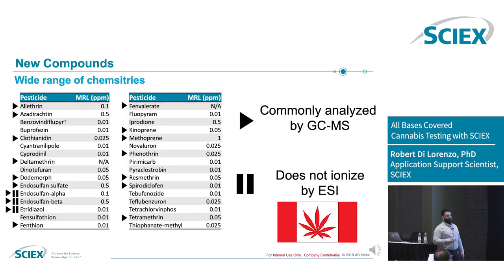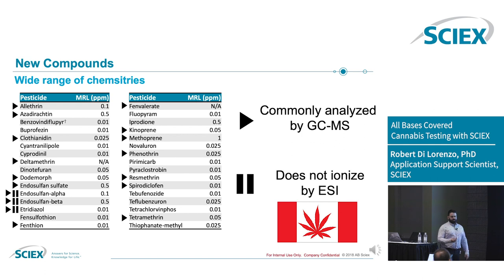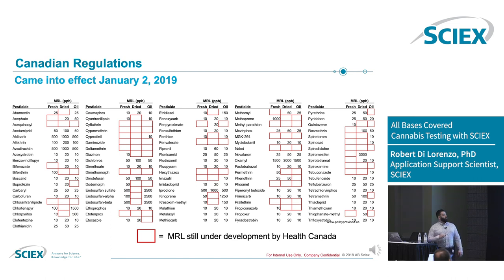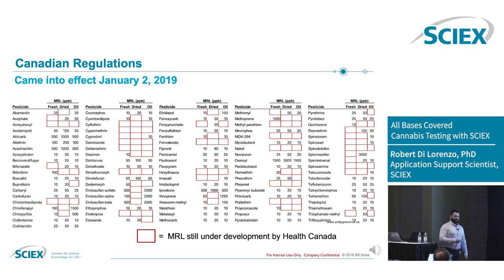These are some of the new compounds that Canada introduced that haven't been on any US list. Things commonly analyzed by GC-MS don't necessarily need to be analyzed by GC-MS, but there are more compounds that simply don't ionize by electrospray — these heavily chlorinated organochlorine pesticides. Etridiazole doesn't really like to go by electrospray. These regulations came into effect January 2, 2019, and all the red boxes in the limits table are where Health Canada still hasn't put a number yet — and it's now June — showing how difficult this analysis is.